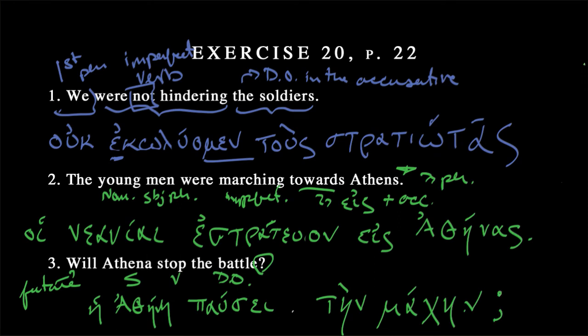We could also rearrange this. When you have questions in Greek, it's the first word that tends to signal what's being questioned. So hē Athēnā paúsei tēn machēn would be asking: "Is it Athena who will be stopping the battle?" If we put paúsei first — paúsei hē Athēnā tēn machēn — the question becomes: "Will that stop happen?" Greek tends to foreground what's being questioned to the very beginning of the sentence, but that's advanced Greek and we don't need to get into that right now.